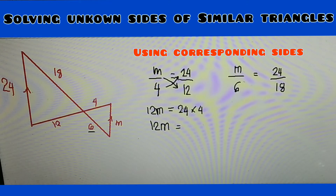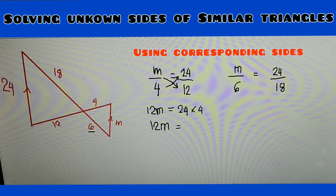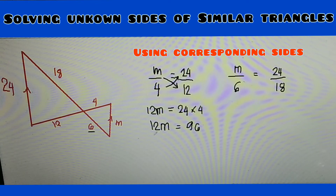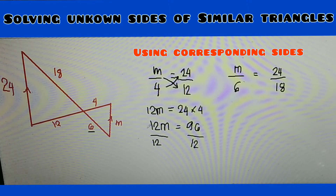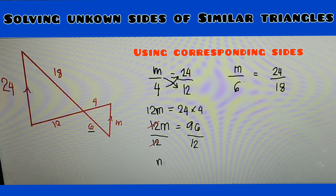12m is equal to 24 times 4, which is what? You can use your calculator. Okay, 96. So it's 96, and then divide both sides by 12 so that we find only the value of m. Divide also by 12. 12 on the left side cancels — 12 divided by 12 is 1 — so we have m is equal to 96 divided by 12, which is 8.